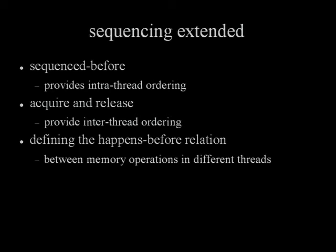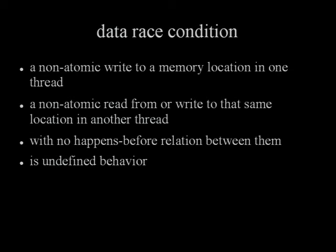Put all of that together and you have a 'happens before' relationship between two memory operations in different threads. Here's where the hard part comes in: data races. If you have a write to a regular (non-atomic) variable, and some other thread either reads or writes to that same variable without a 'happens before' relationship between those two operations, you have a race condition and your program has undefined behavior. Undefined behavior means the standard can't say anything about what's going on — you get random word tearing, wild pointers, all that kind of stuff. Really, the standard can't describe what's happening.